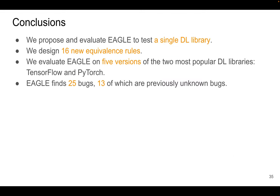In conclusion, we propose and evaluate EGLE to test a single deep learning library. We designed 16 new equivalence rules in six categories. We evaluate EGLE on five versions of the two most popular deep learning libraries, TensorFlow and PyTorch. EGLE finds 25 bugs, 13 of which are previously unknown bugs. You can find more details in our paper. Thank you.